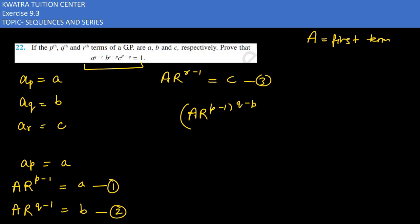This would be q minus r. And then we have A times r to the power r minus 1, and the power would be p minus q, and it should equal 1. We will see that it equals 1 or not.